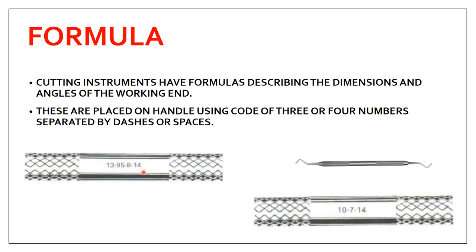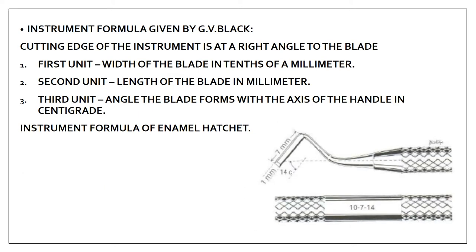The three-unit instrument formula was given by GV Black, in which the cutting edge of the instrument is at a right angle to the blade. For example, this is an enamel hatchet. The formula has three numbers on the handle. The first unit is the width of the blade in tens of millimeters — so 10 means 1 mm. The second unit is the length of the blade in millimeters — for example, 7 mm. Most instruments use this three-unit formula.